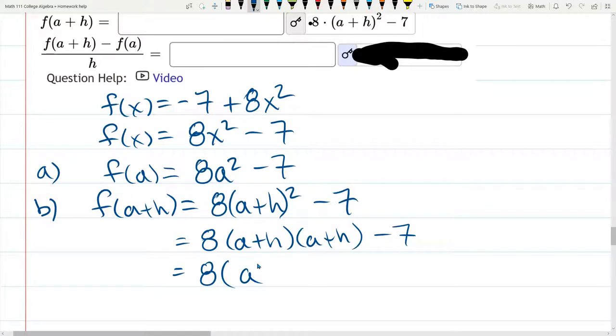So a times a is a squared. The outside is a h. The inside is a h. So there's two of them. a h plus a h. That's 2 a h. h times h. h squared. Minus 7.